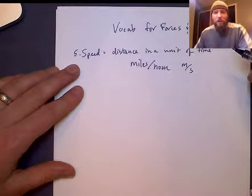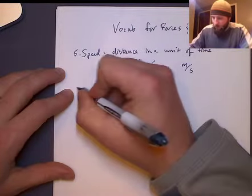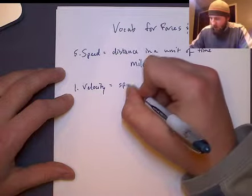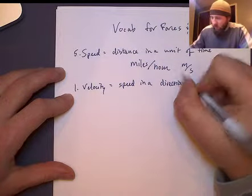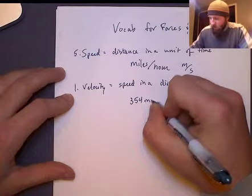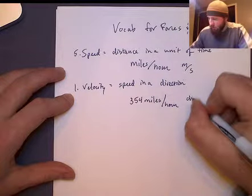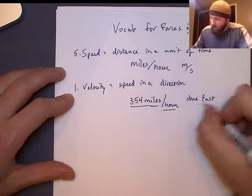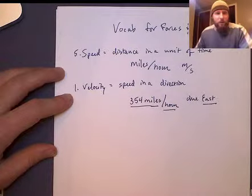From speed, we can apply a direction and come up with velocity. Number one is velocity, which we define as speed in a direction. For example, the airplane was moving at 354 miles per hour flying due east. Our speed is 354 miles per hour and our direction is east.